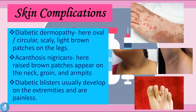The second complication is skin complications. These include diabetic dermopathy — oval, circular, scaly light brown patches on the legs. We can also have acanthosis nigricans — raised brown patches which appear on the neck, the groin, and the armpits. Additionally, diabetic blisters can develop on the extremities and are actually painless.